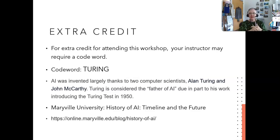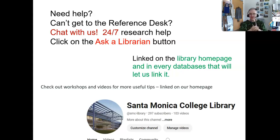If you are coming to this workshop as extra credit for a class, your teacher may ask for an extra credit code — that code is 'Turing,' after Alan Turing, who is often considered the father of AI due to his early work in computing and the Turing Test. If you need help at any time during your research, you can chat with us, come in and talk to us at the reference desk, or call us — though I recommend chatting over calling. Take a look at the workshops and videos on our YouTube channel linked through our homepage. Ask us if you get stuck, and ask us early and often. We are here to help you succeed. Good luck with your research. Take care.